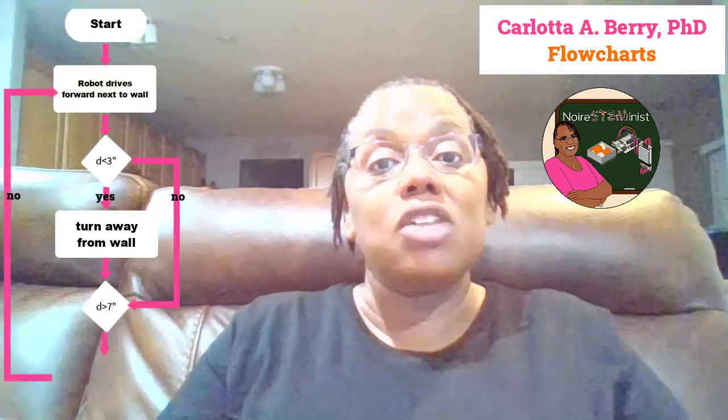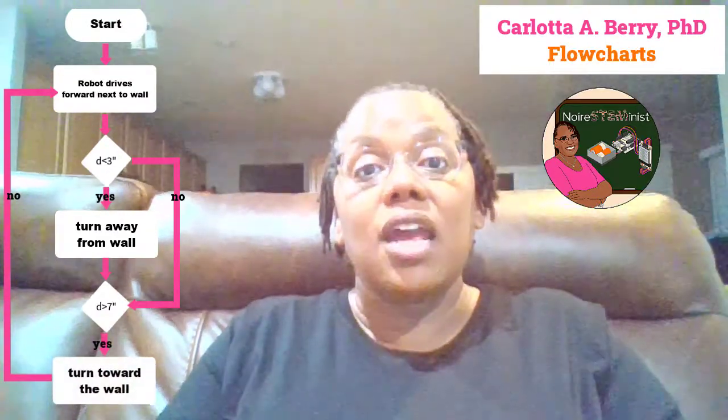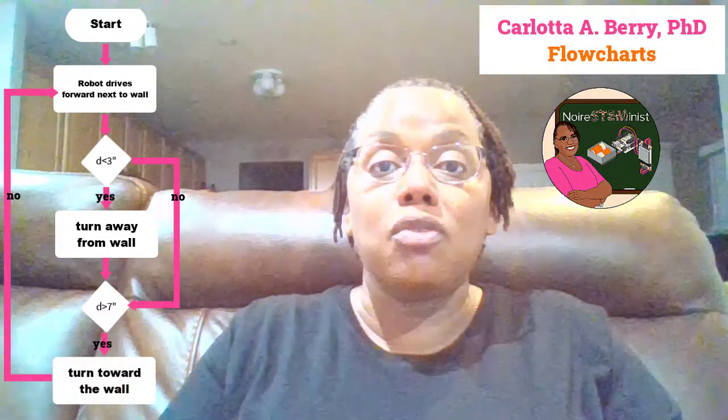So the first thing we do: we start and place the robot down next to the wall. We check whether the robot is within three inches of the wall. If the answer is yes, then the robot moves away from the wall. If the answer is no, then we check whether the robot is greater than seven inches from the wall. If the answer is yes, the robot moves towards the wall. If the answer is no, then the robot continues to move forward.